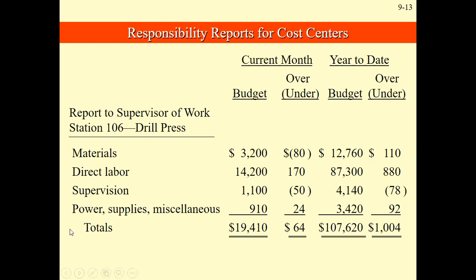These are the components of the cost: materials, direct labor, supervision, power supplies, and miscellaneous, and the totals. We have the current month and year-to-date. Current month is the present month, while year-to-date is the combination of all the months available. Then this is the budget, and this would be the over or under. The budget is going to be the standard — that's our target, quota, or benchmark.